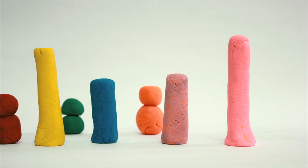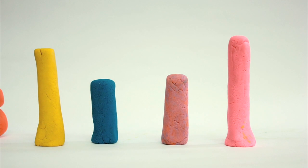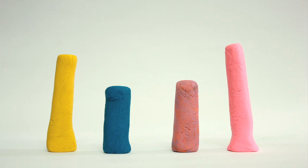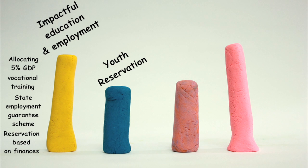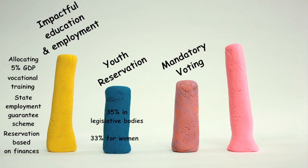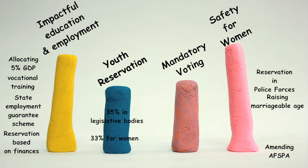On collecting voices for the Unmanifesto campaign, we found that the prominent voices of the youth were demanding: making education relevant and impactful, mandate 35% reservation of youth in legislative assemblies and cabinet equivalent bodies along with 33% reservation for women, making the youth pay penalty for not exercising their right to vote, ensuring safety and dignity for women.